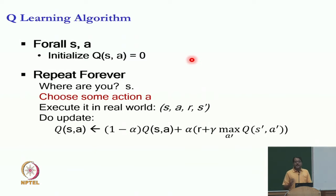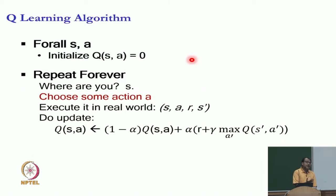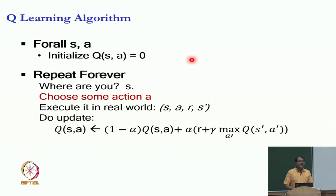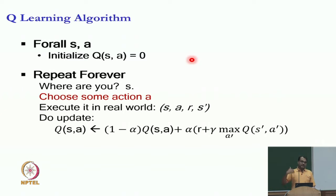This is a problem we also faced in model-based learning. In model-based RL, executing a given policy will only explore part of the state space and not the other part. So we won't learn about the rest of the state space, and therefore we won't be able to improve our policy in the desired direction.